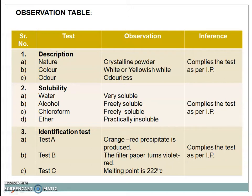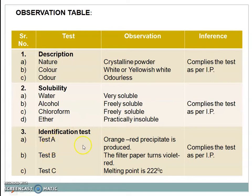After performing the procedure we got the following observations. Description: nature is crystalline powder, color is white to yellowish white, odor is odorless — the given sample complies the test as per IP. Solubility: in water it is very soluble, in alcohol freely soluble, in chloroform freely soluble, in ether practically insoluble — it complies the test as per IP. Identification Test A gives orange-red precipitate; Test B, the filter paper turns violet; Test C, melting point is 222 degrees Celsius — it complies the test as per IP.